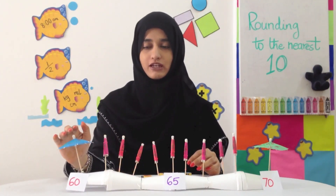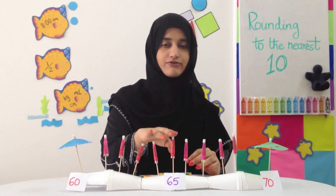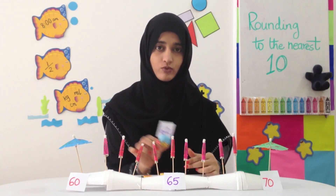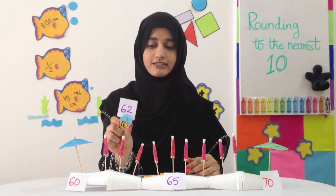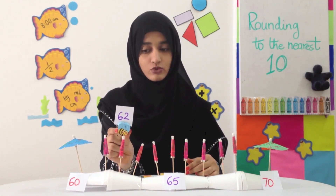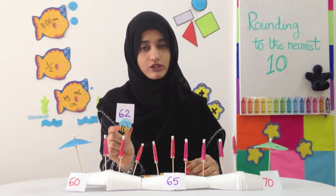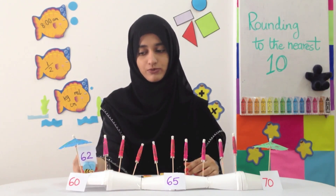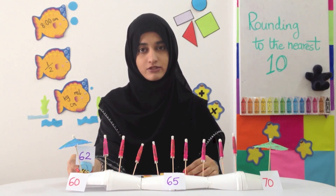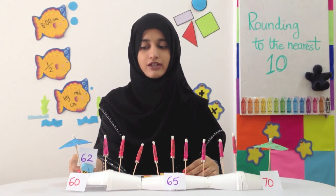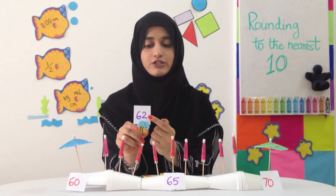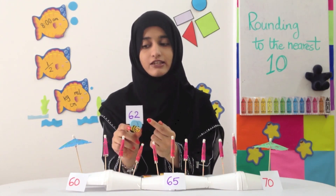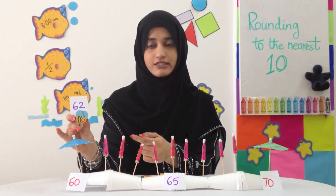This umbrella is umbrella number 60, this one is 65, and this one is 70. Now the bumblebee was on number 62. Umbrella number 62, and then it started to rain. So the bumblebee rushed towards the nearest umbrella that was open and it came to umbrella number 60. The number 2 is smaller than 5 in the units place, and the nearest umbrella was number 60.